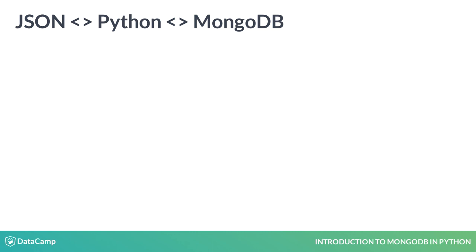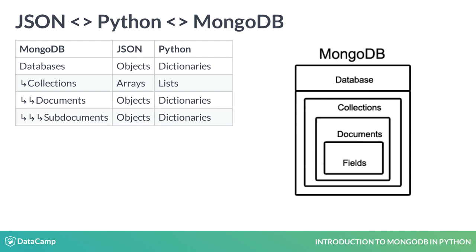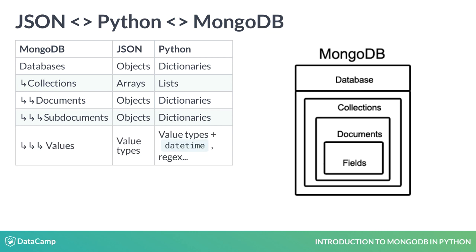A database maps names to collections. You can access collections by name the same way you would access values in a Python dictionary. A collection, in turn, is like a list of dictionaries called documents by MongoDB. When a dictionary is a value within a document, that's a sub-document. Values in a document can be any of the types I mentioned. MongoDB also supports some types native to Python but not to JSON — two examples are dates and regular expressions.